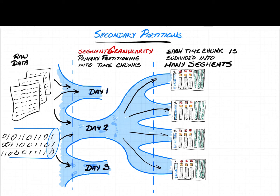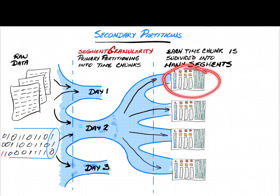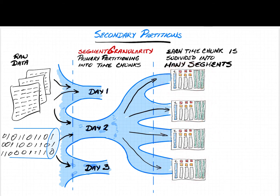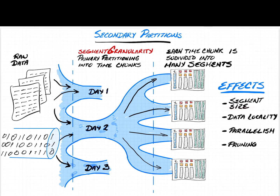Secondary partitioning takes the data within a day and subdivides it into multiple blocks of data to build segment files. These are Apache Druid's columnarized and pre-indexed files. The first reason is segment size — the rule of thumb is about five million rows per segment, so if you have 24 million rows you'll want at least four or five partitions. In some partitioning strategies it also provides data locality, meaning the same values are grouped together in the same segment files, which helps compression and efficiency.